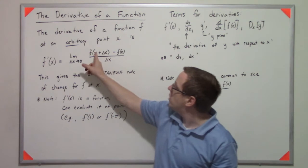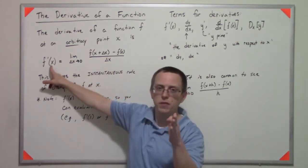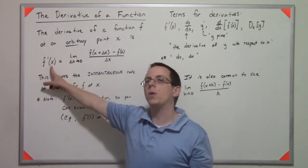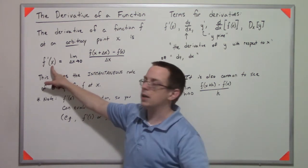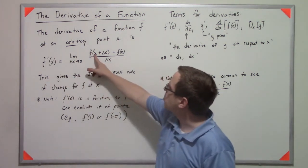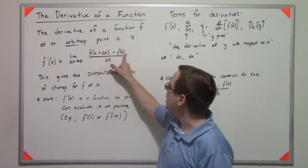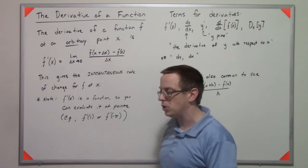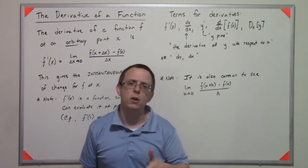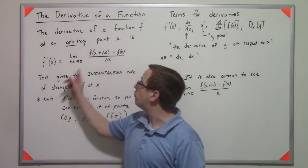The idea is instead of evaluating f prime at some physical value c, we're going to take a parameter x. We're going to say f prime at some number x is f of x plus delta x minus f of x over delta x, and then that limit is delta x approaches 0.